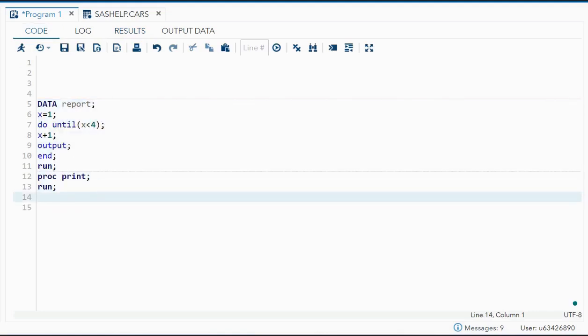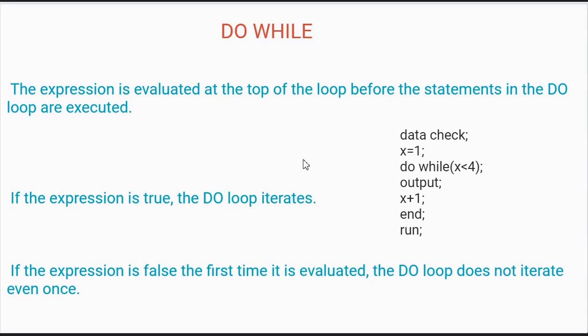Now we can move on to understand DO WHILE. DO WHILE is exactly opposite of DO UNTIL. Over here, it will iterate until your expression is true — once it is false, it will stop iterating. Now over here, the expression will be evaluated at the top of the loop. In DO UNTIL it was at the bottom of the loop, but here the expression will be evaluated at the top. The expression is next to your DO WHILE — x is smaller than four, that is your expression. And then the statement will be executed. So if the expression is true, the DO loop will iterate; once the expression becomes false, it will stop iterating.